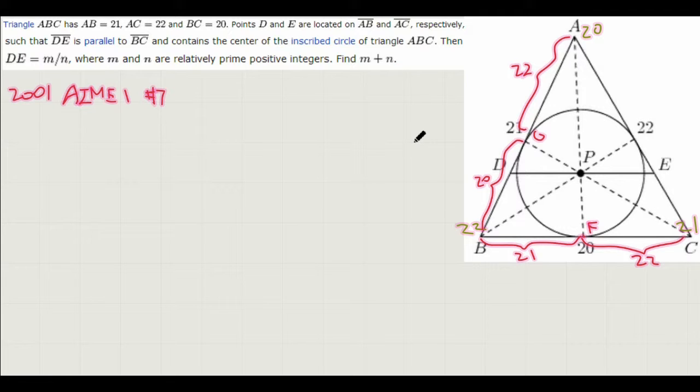Anyways, now we want to find a way to relate DE with another line that we know the length of. So BC is an obvious candidate, because DE and BC are parallel. So let's see if we can link their length.